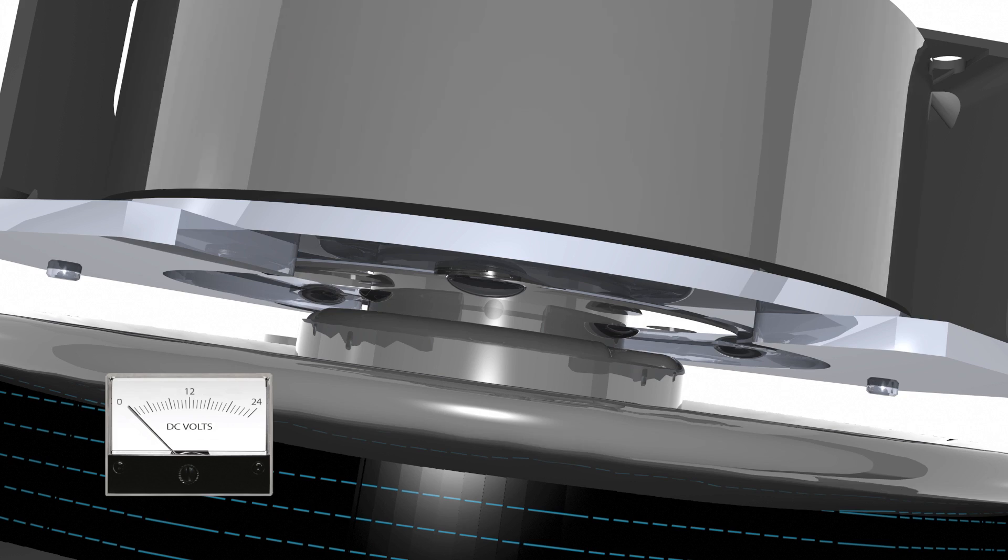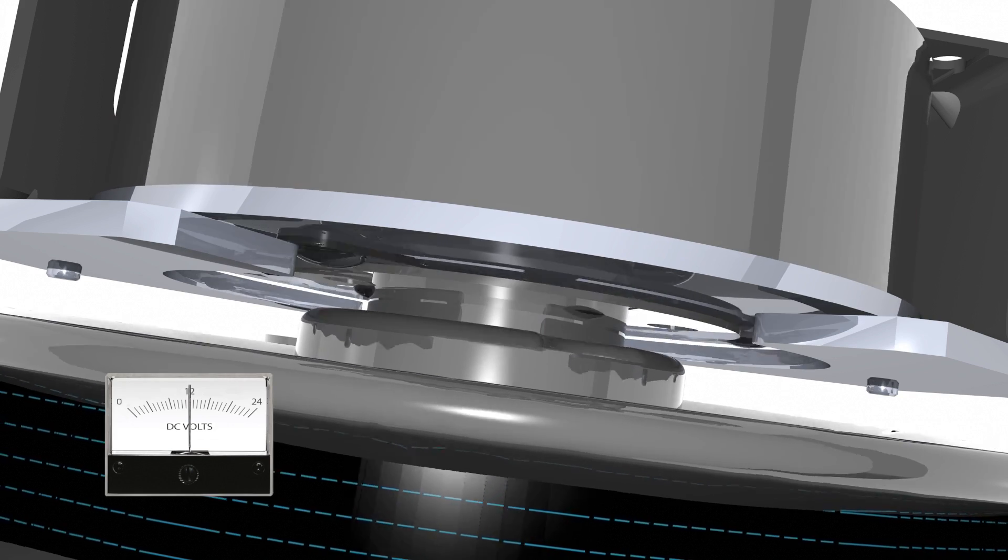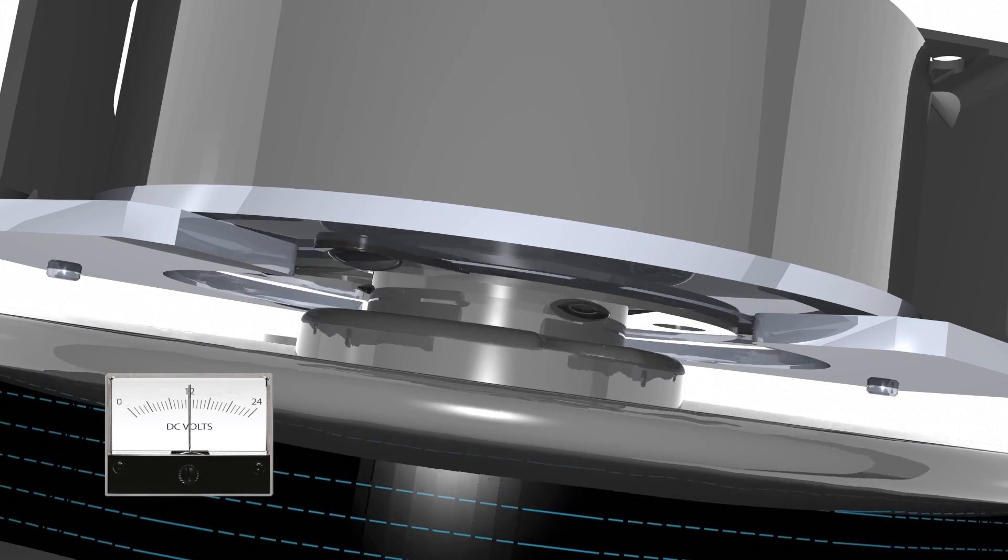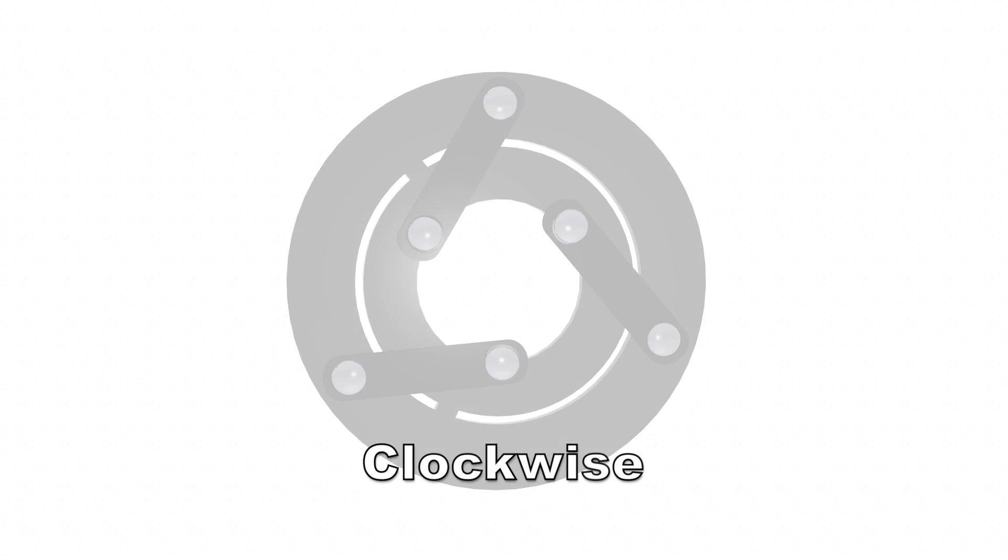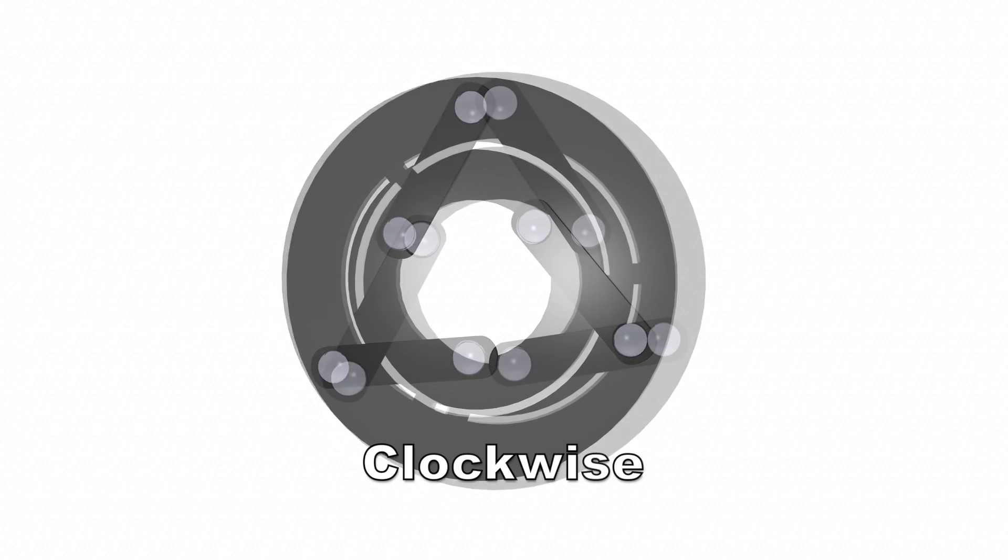The torque is transmitted from the armature through the leaf springs into the pulley. The springs need to run in tension, not compression, so clutches are either built to run clockwise or counter-clockwise.